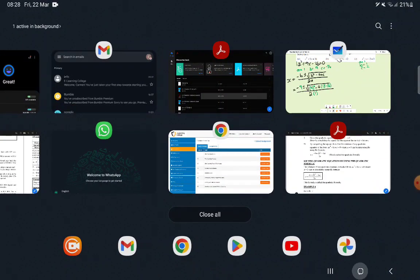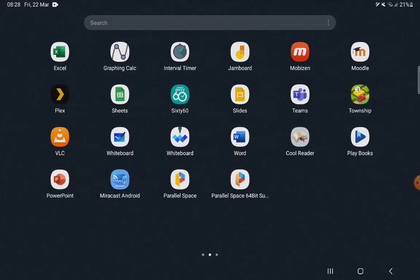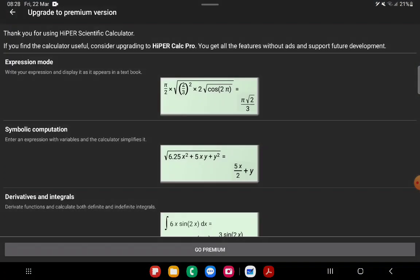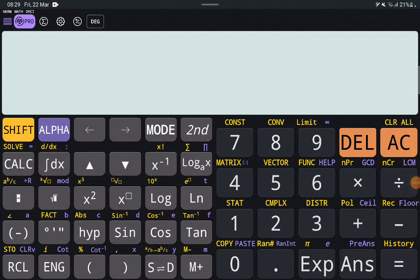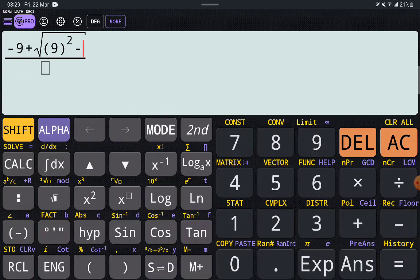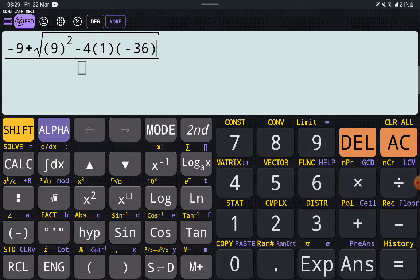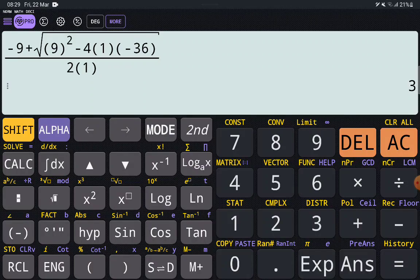So our next step is going to be to get our calculator. Let's use this calculator. So what we're going to do is we are going to create a fraction. And in the numerator of the fraction, we are going to input negative 9. And then we are going to do plus first, the square root of 9 squared. So open bracket 9, close bracket, squared, minus 4, open bracket, 1, close bracket, open bracket, negative 36, close bracket. Notice that I'm doing it exactly the way that I would do it in ink. So I'm typing it exactly the way that I would write it down.